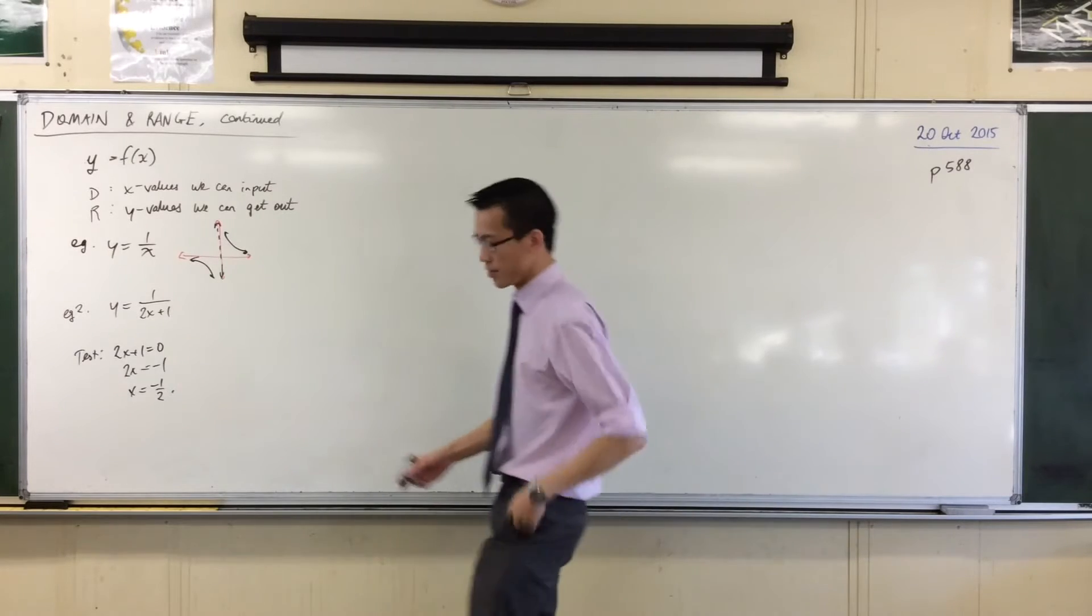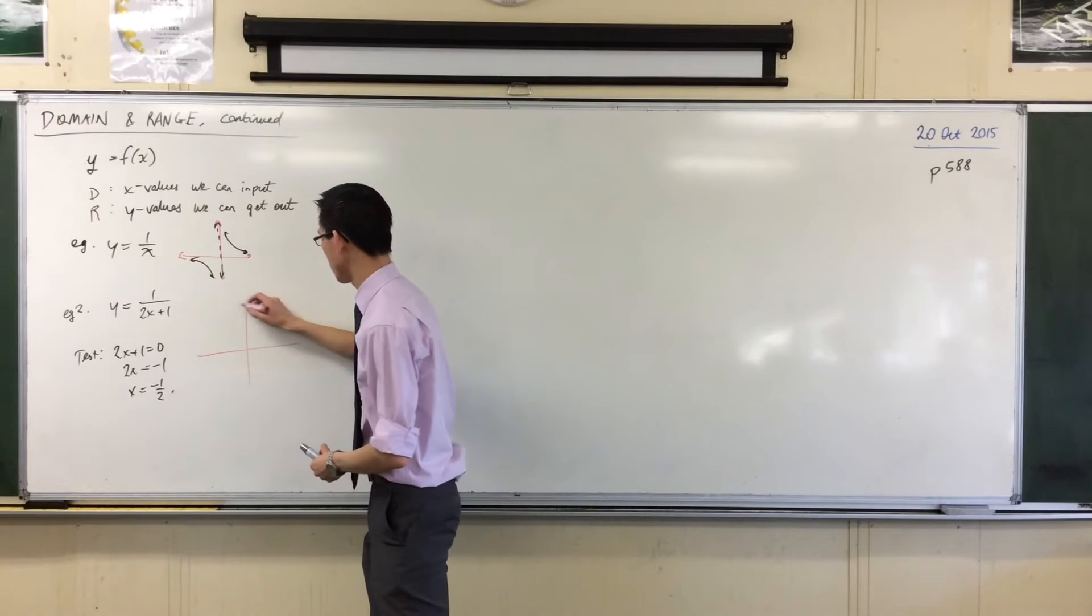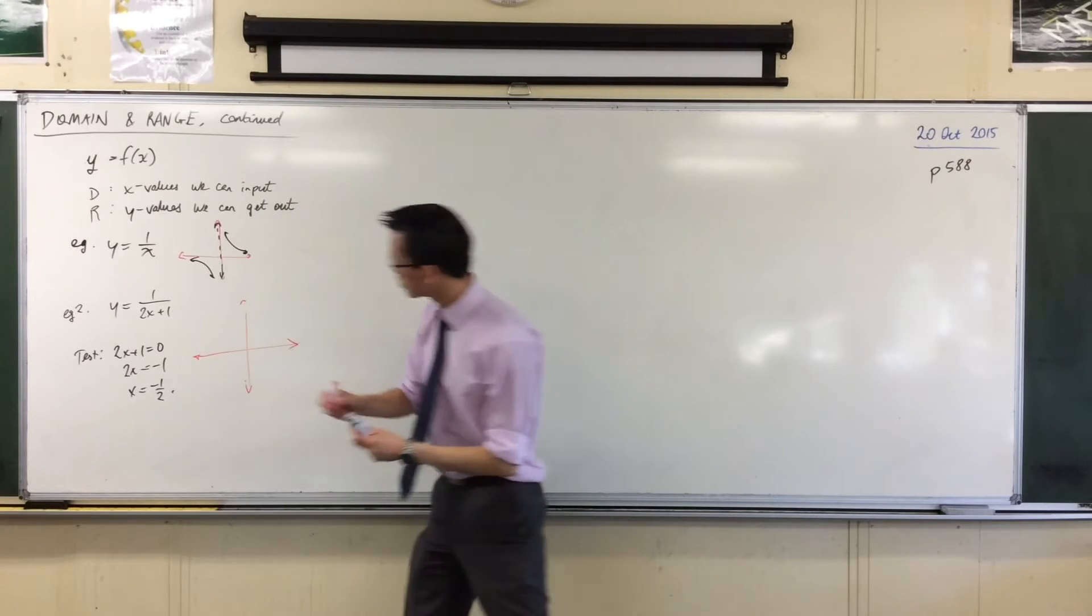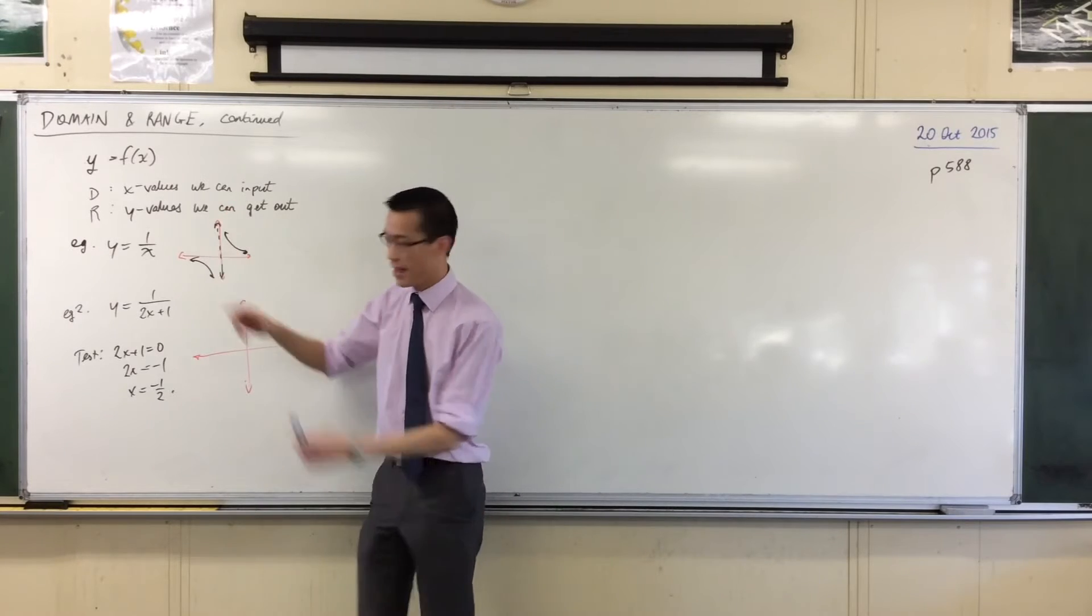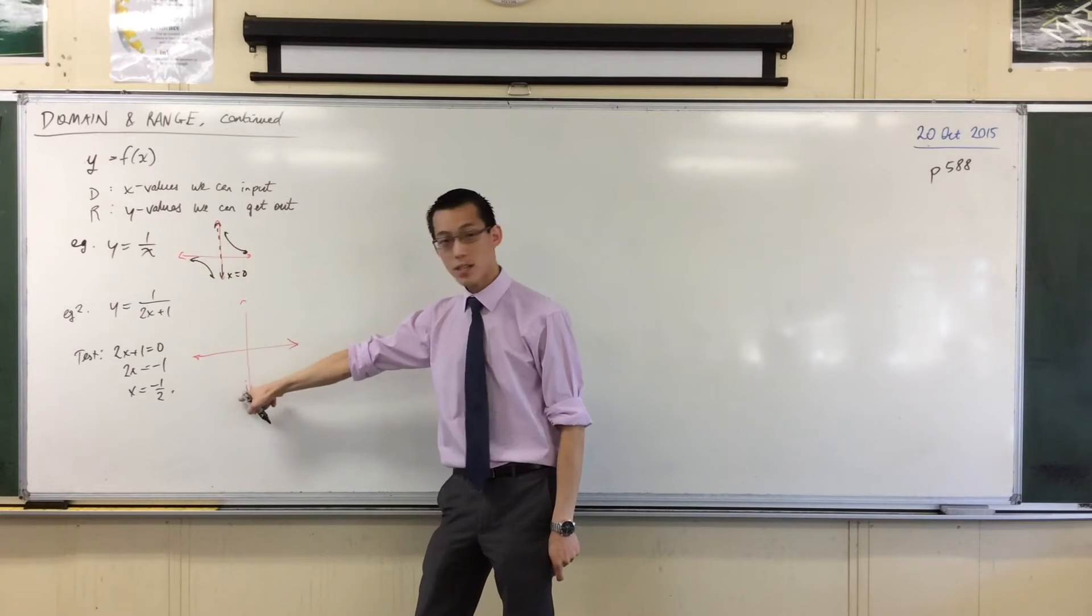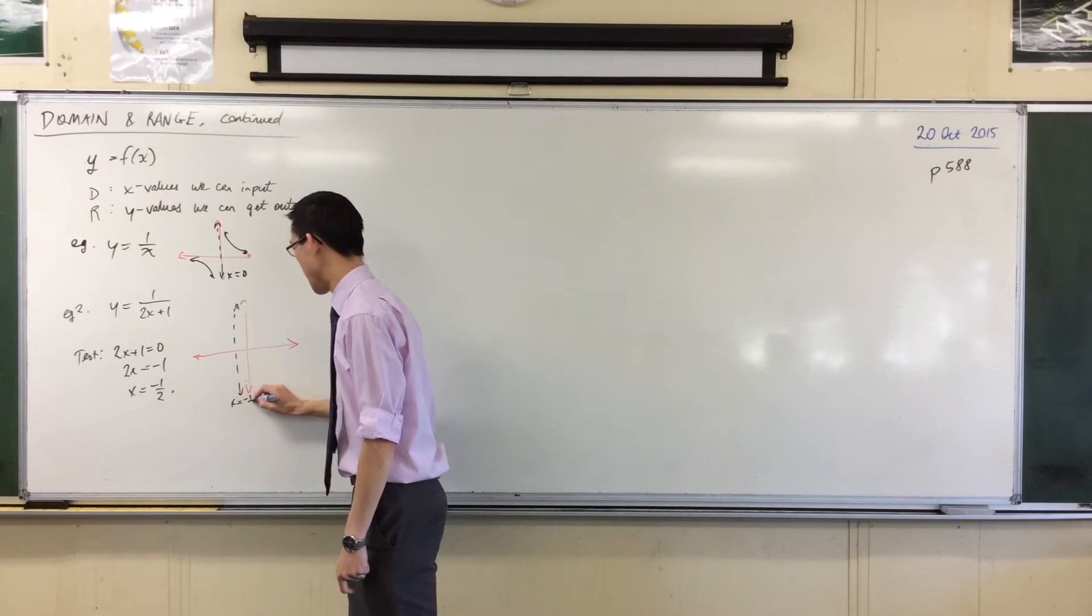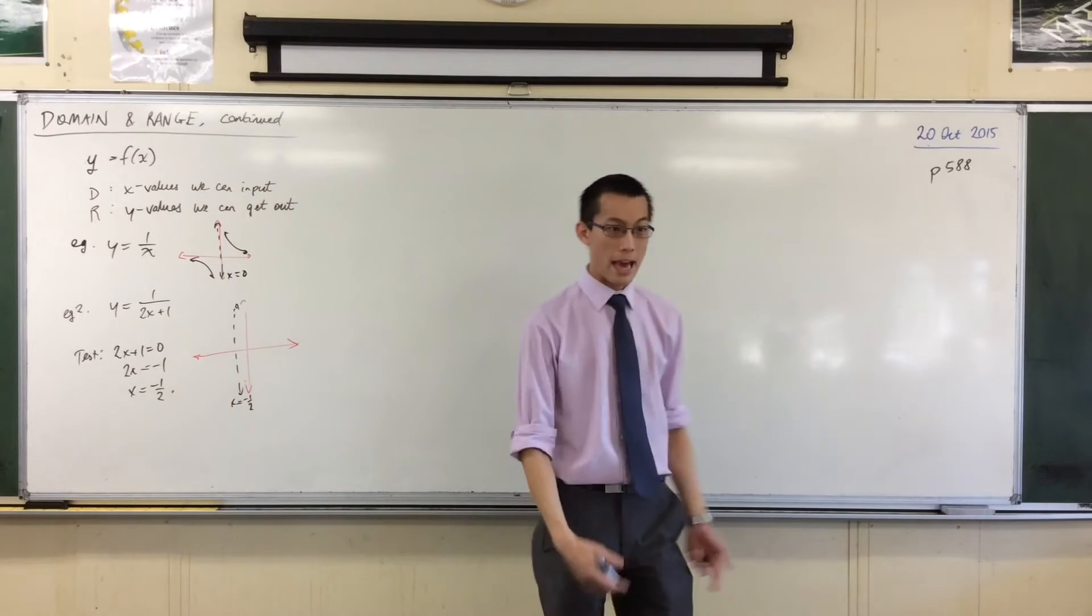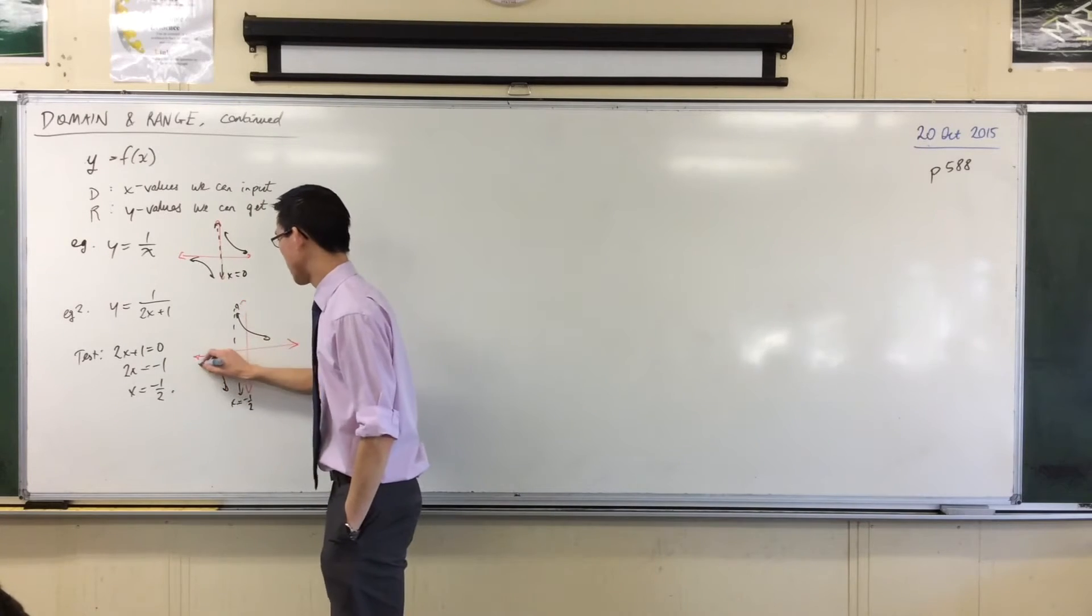So, it so happens that what does this graph look like? It looks just like the one I just showed you with one subtle difference. See this vertical asymptote where I can't go? Instead of being at x equals 0, like this one, this one will be at x equals negative 1 half. And more or less, everything else will look the same. It will be something like this and something like this.